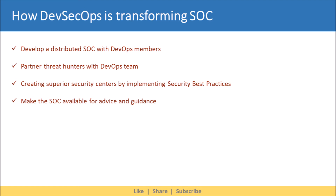Next, partner threat hunters with the DevOps team. Threat hunters can communicate directly with development or ops teams to address security gaps at their core, rather than isolating a threat and reporting it to management. Next, we can create superior security centers — the SOC can work with specific development and operation groups to put in place security best practices.